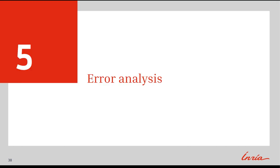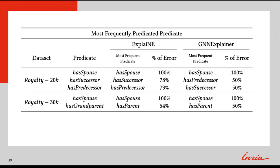We perform an error analysis on predicted explanations with a Jaccard score strictly less than 1. This table reports the most frequently predicted predicates amongst errors and the percentage of errors this predicate occurred in. For example, on the royalty30k dataset on the has-grandparent subset, has-parent occurred in 54% of errors for Explaine, meaning the predicate was correctly predicted in the explanation, but one or both of the entities were incorrect.